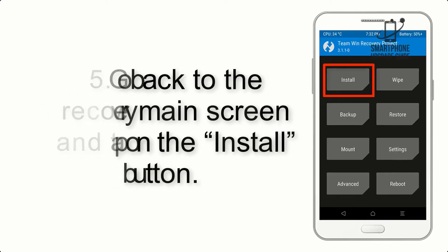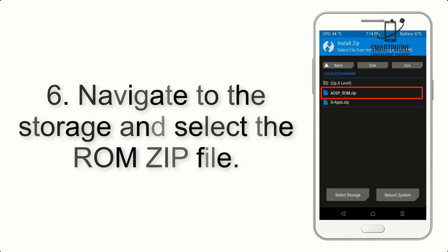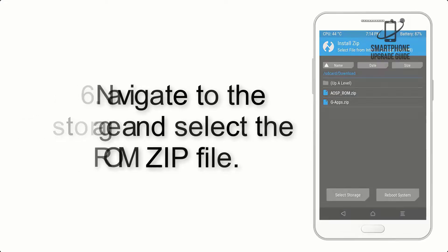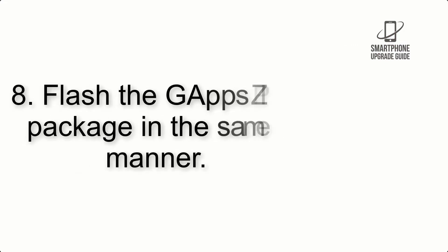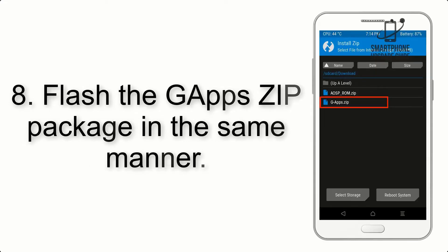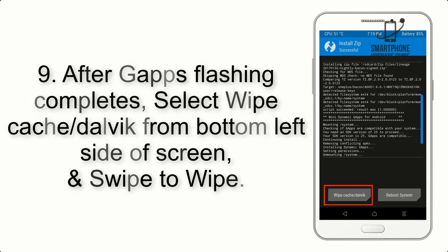Step 5: Go back to the recovery main screen and tap on the Install button. Step 6: Navigate to the storage and select the ROM zip file. Step 7: Swipe the button on the screen to install the ROM file.